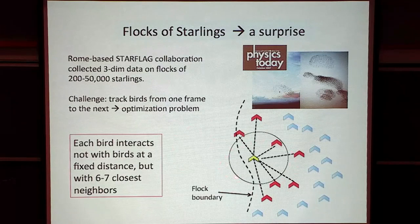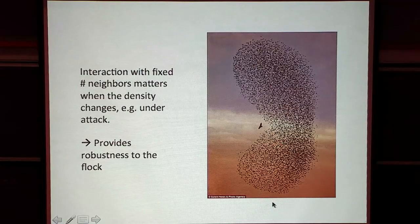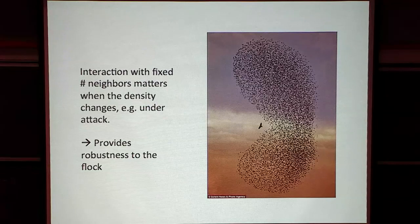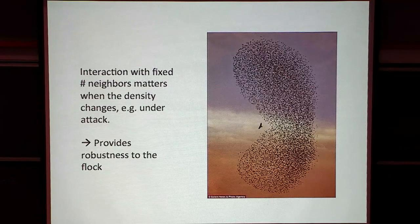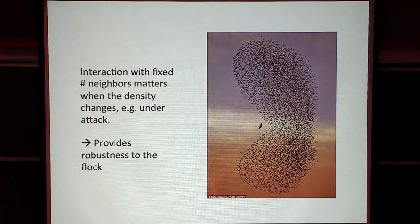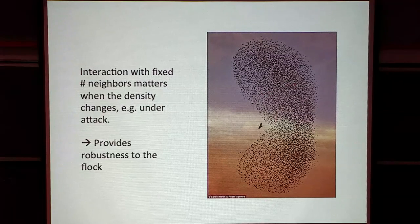Presumably this ingredient is what allows the flock to be so robust — for instance, to respond so quickly to a predator. You must have seen flocks attacked by predators: the flock splits but then manages to reconnect very quickly. This type of topological interaction provides robustness. Although this kind of model is based on a rule, not a physical interaction, understanding it requires the tools of statistical mechanics — the behavior of many interacting things at large scale. That's why we think of it as physics.